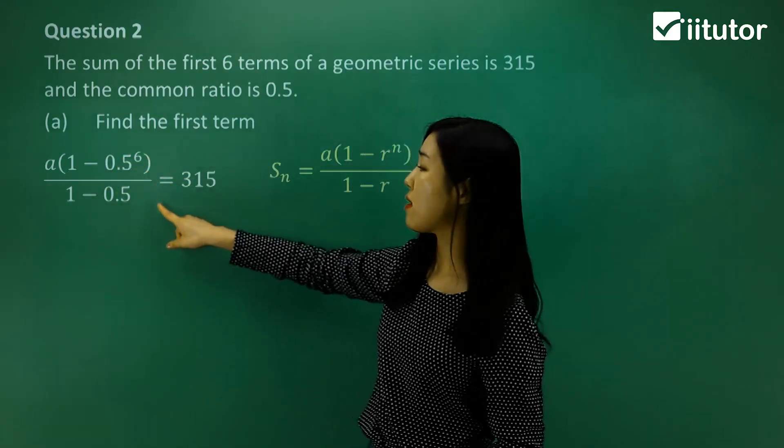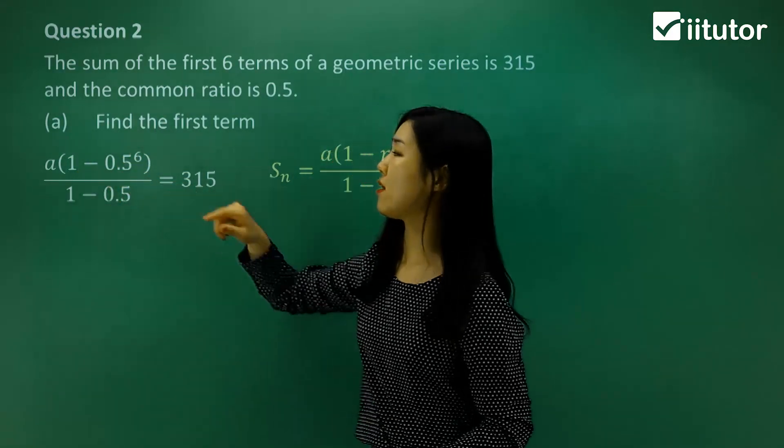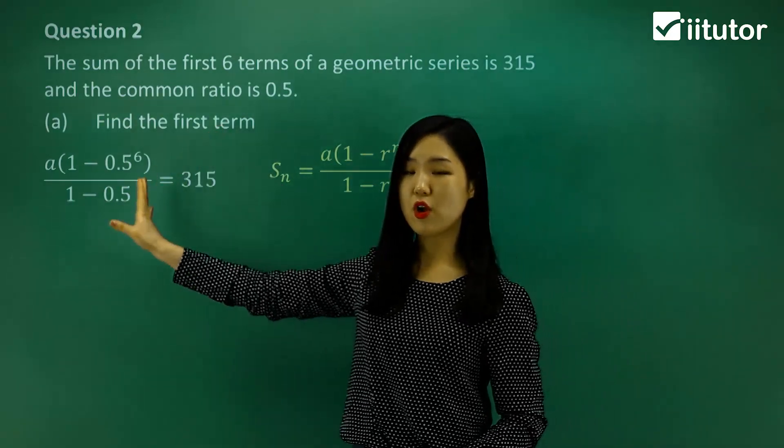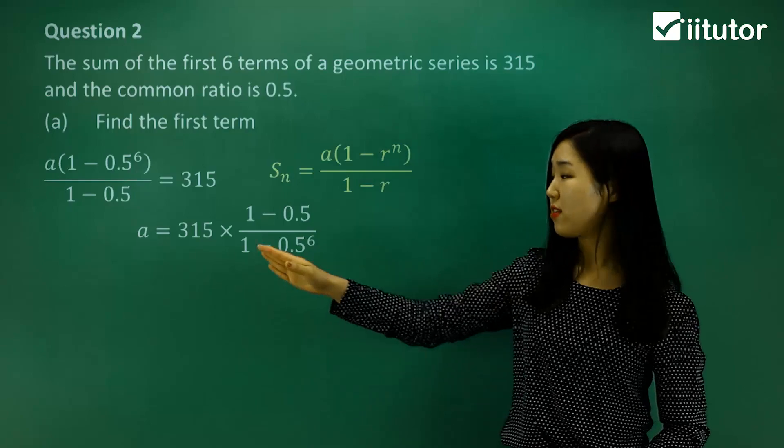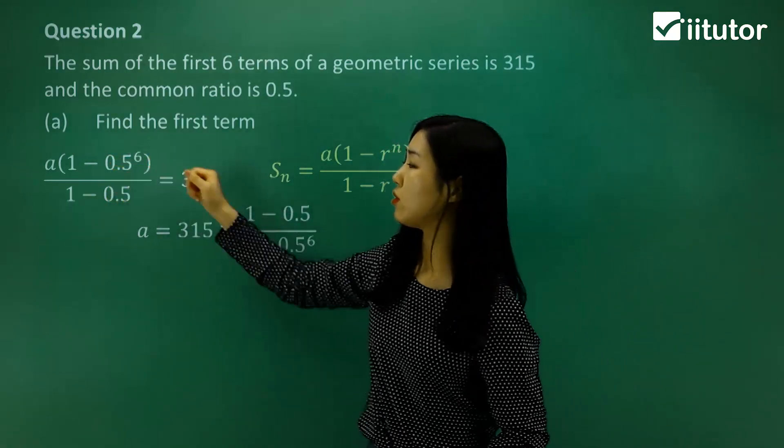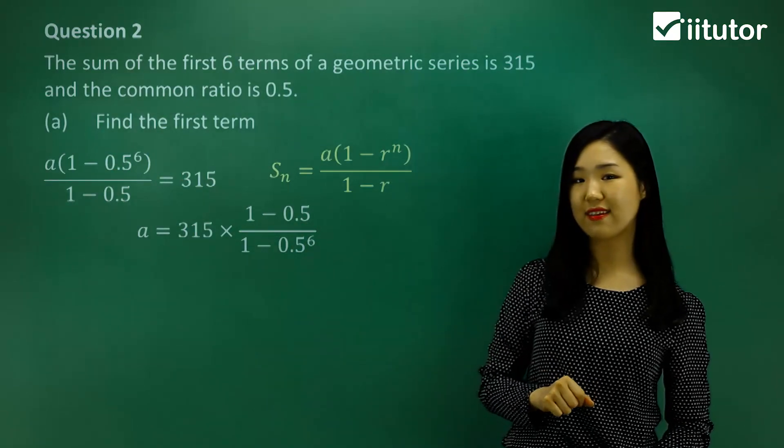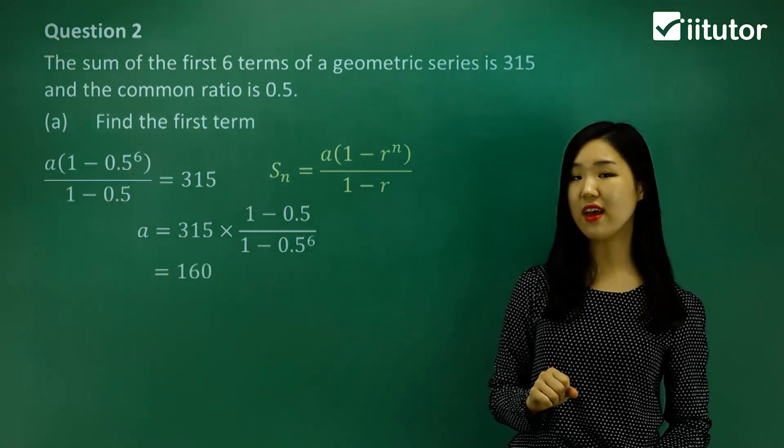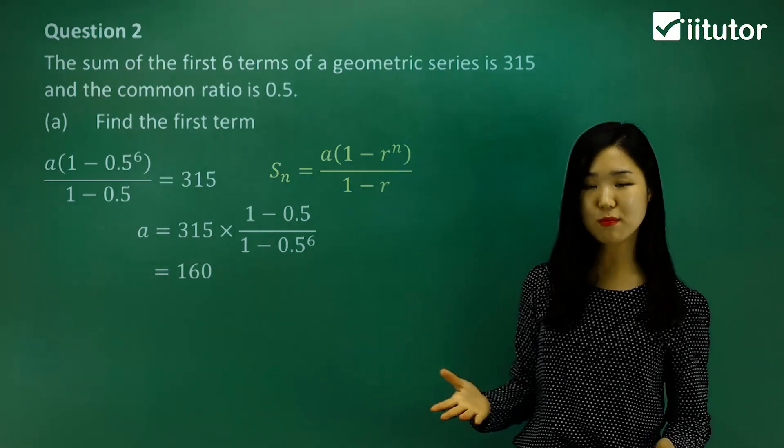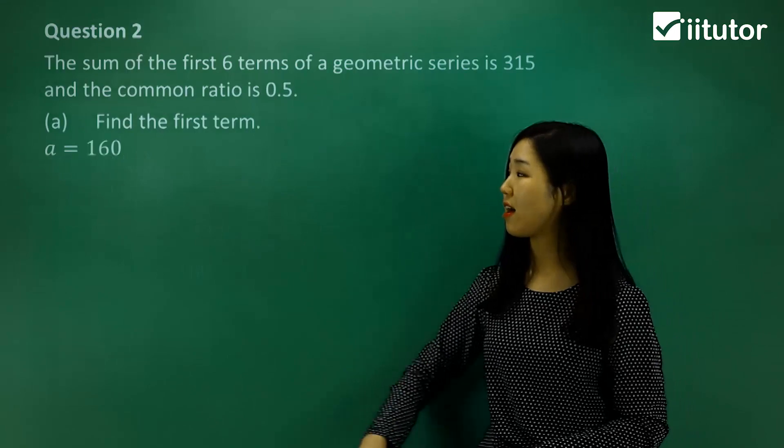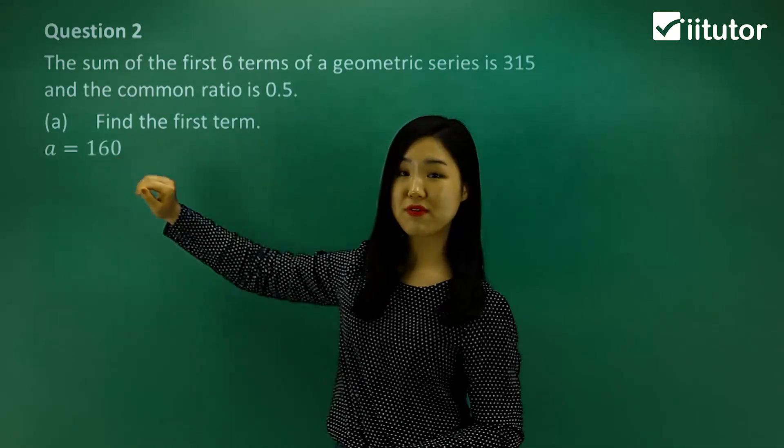So if I multiply this side by the reciprocal, the flip of this, 1 minus 0.5 over 1 minus 0.5 to the power of 6. If I flip it around, the left hand side will only have a left. So the left hand side is just a. And you multiply the other side by the reciprocal of that fraction. And then what you can do now is just plug all of those values in the calculator and get 160. So a is simply 160. That's all you need to do. So I'm going to write that underneath my part a. I've got my first term now.